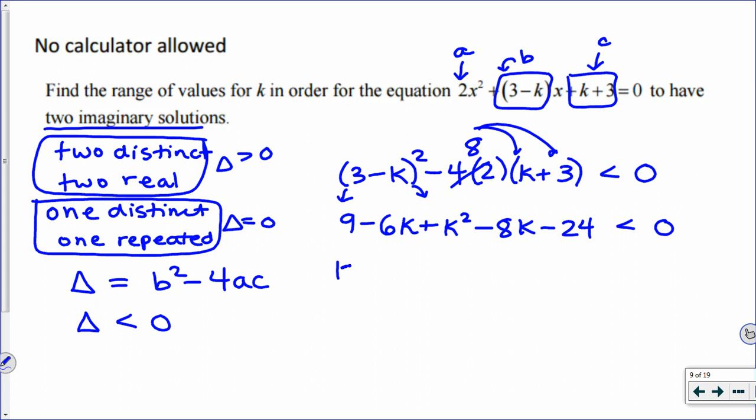I'm going to clean up this side of the equation a little bit. K squared, I have minus 14k in the middle. I have a minus 24 and then a positive 9.